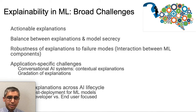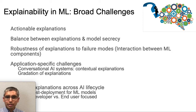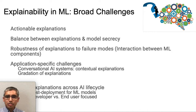Let's illustrate with an example. Suppose a user has applied for a loan and has been denied. It would be desirable if the explanation can be in the form of an actionable recourse — that is, the explanation can suggest what the user needs to do to qualify for the loan in future. The second challenge is about the need for balancing between explanations and model secrecy. Recent work has shown that explanations can sometimes leak information about the model parameters and internals.